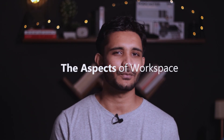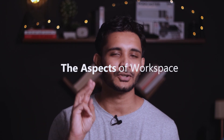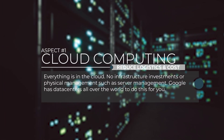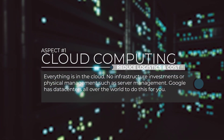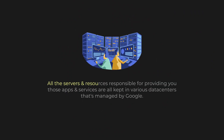To really understand everything that Workspace provides, we need to split it into three sections: cloud computing, productivity, and collaboration. The cloud computing aspect basically ensures that you don't have to maintain and manage any physical infrastructure to run the suite of products and services that Google Workspace provides. All the servers and resources are kept in various data centers managed by Google, and therefore Google Workspace is what we now call a software as a service or SaaS platform, just like Microsoft 365.